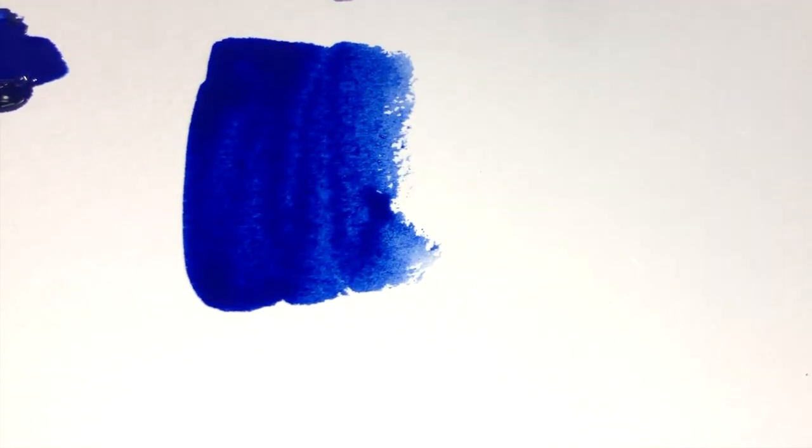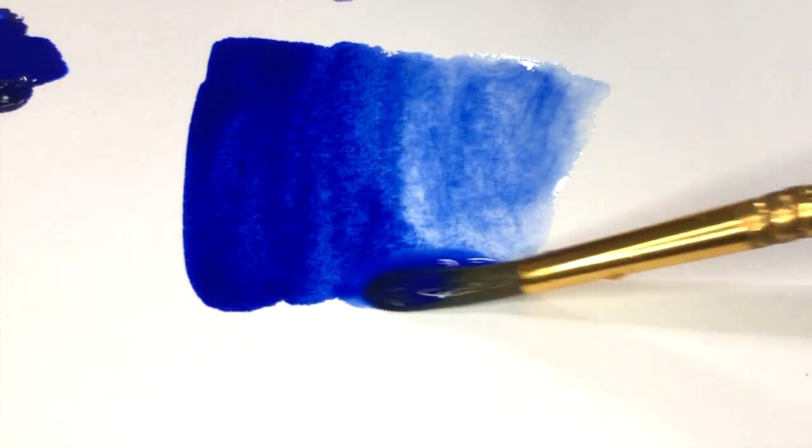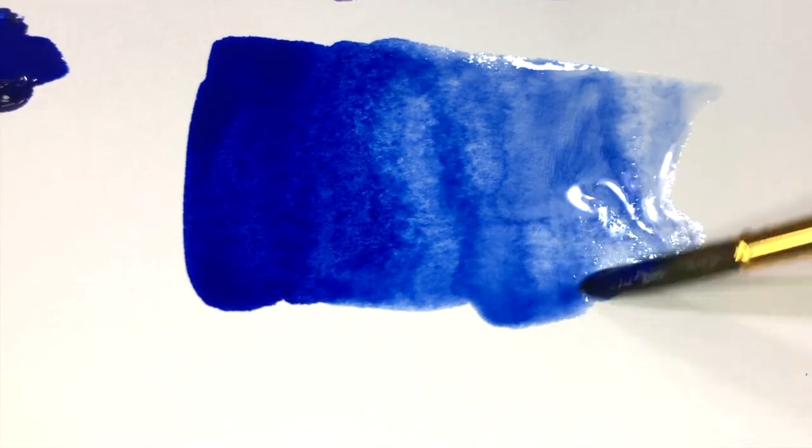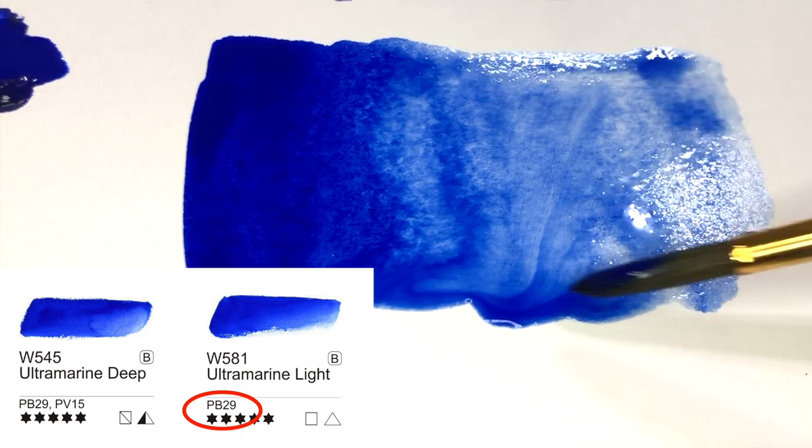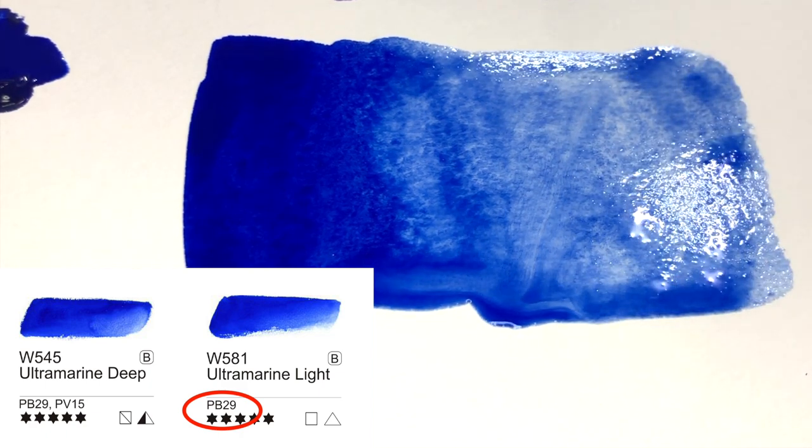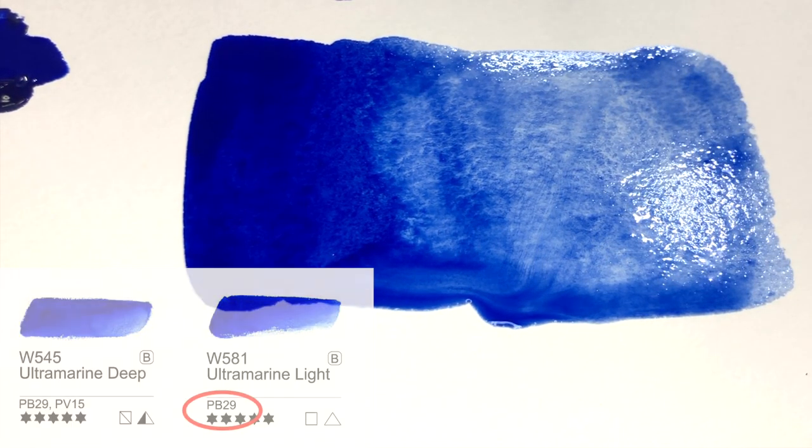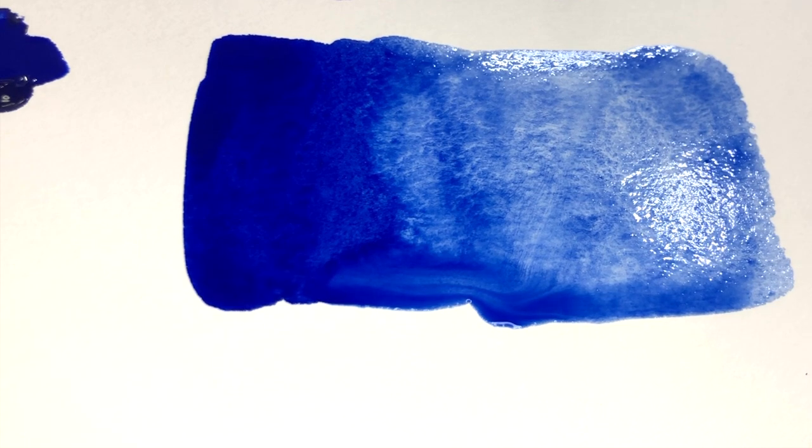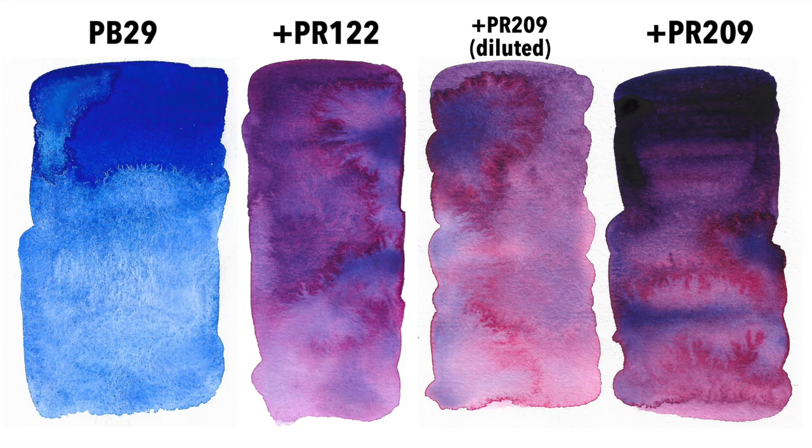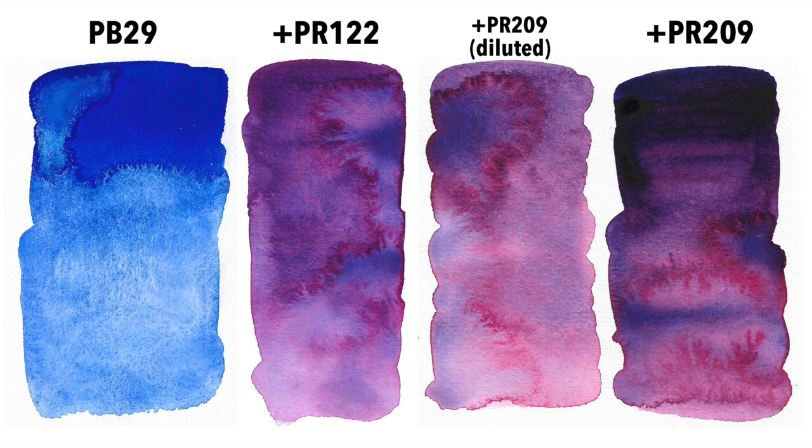Starting with, you guessed it, Ultramarine Blue PB29. Mijello has two versions, the Double Pigment Ultramarine Deep and the Single Pigment Ultramarine Light, so the one shown here is the Single Pigment PB29. I'm actually on my second tube of this color already, because apparently I use PB29 in mixes a lot!